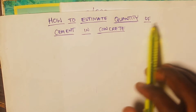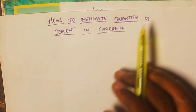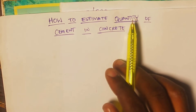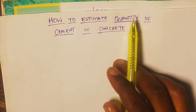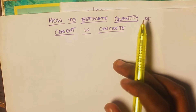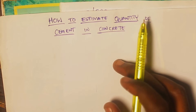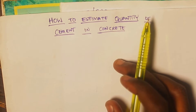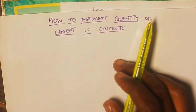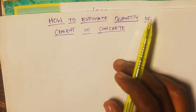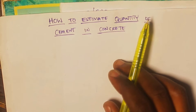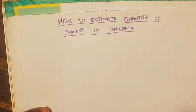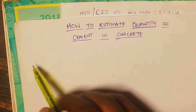In today's video, we are going to be learning how to estimate the quantity of cement in concrete. In most scenarios, especially when you are working on a site, you would likely be asked the quantity of bags of cement that would be utilized in carrying out a specific concrete work. The only thing you will see in your bill of quantities is just the quantity of concrete in cubic meters, which does not specifically state how many bags of cement or the quantity of sand and aggregates. So you would likely have to recalculate yourself to determine the bags of cement and also the quantity of sand and aggregates that will be used in your concrete casting.